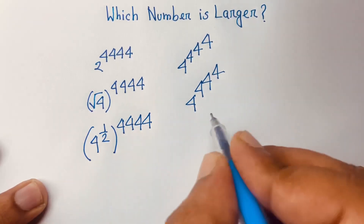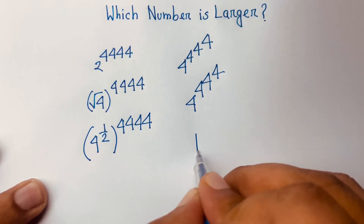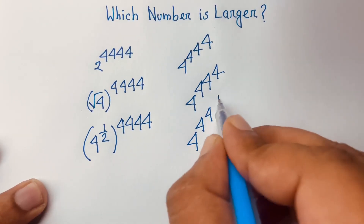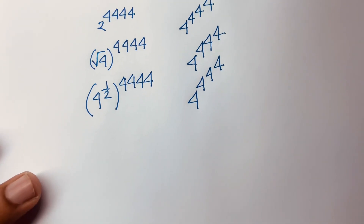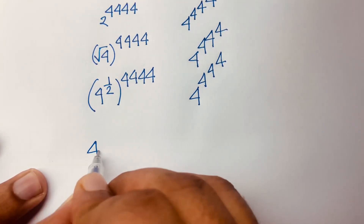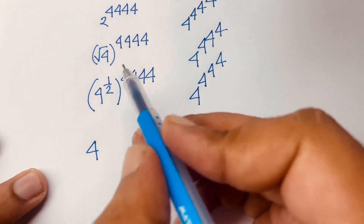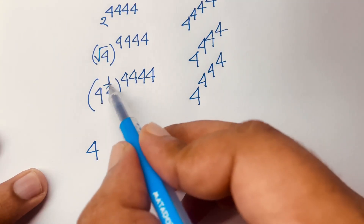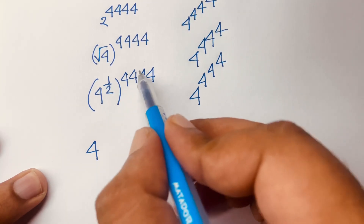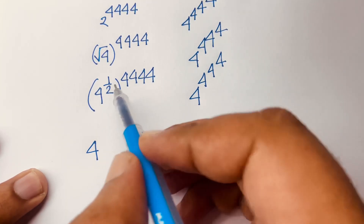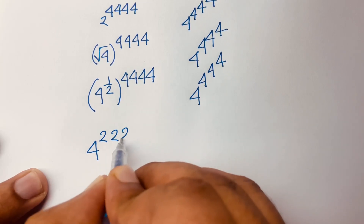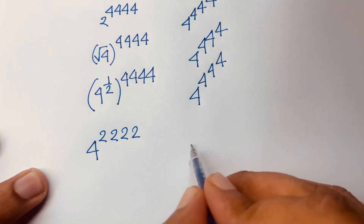Now I can apply the exponential rule: a to the power m, raised to the power n, equals a to the power m times n. So I divide the exponent by 2. The left side simplifies: the one-half multiplies into the tower, giving us 4 to the power 2, 2, 2, 2.